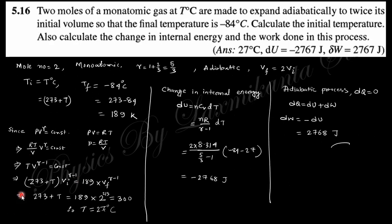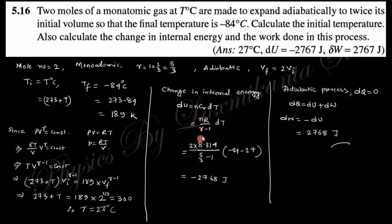Question 17: Two moles of monoatomic gas at T°C are made to expand adiabatically to twice the initial volume, such that the final temperature is −84°C (189 K). Calculate the initial temperature, change in internal energy, and work done. For monoatomic gas, γ = 5/3. Using the temperature-volume relation and substituting, the initial temperature is found to be 27°C. The change in internal energy is ΔU = nCᵥΔT = nR/(γ−1) × ΔT. Since the process is adiabatic (dQ = 0), work done W = −ΔU.